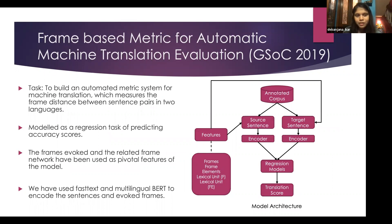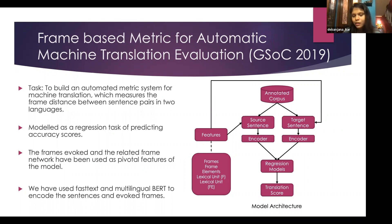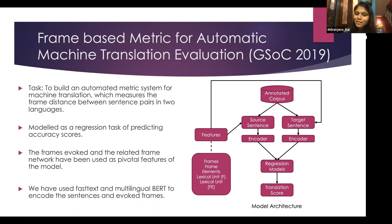In our GSoC work, we tried to create a metric for automatic MT evaluation using frame semantics. We used a simple approach with regression models to generate translation scores on a small corpus. We encoded it using multilingual encoders and fed those representations into regression models — linear regression and SVM regression. For features, we used frames, frame elements, lexical units, and their combinations.